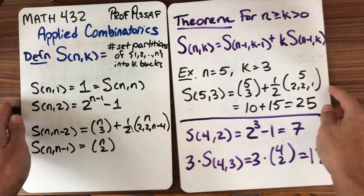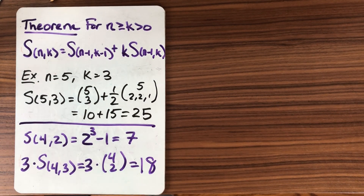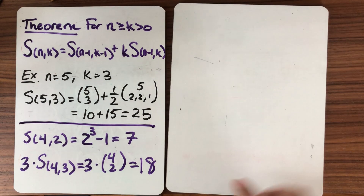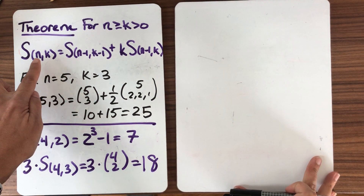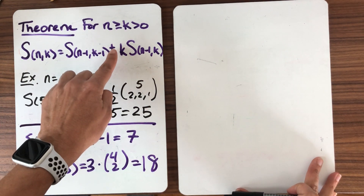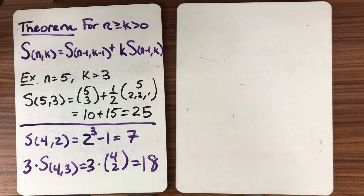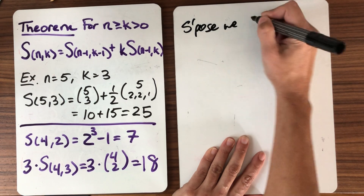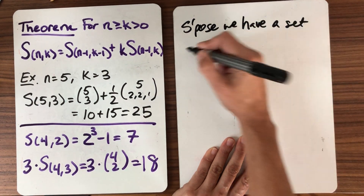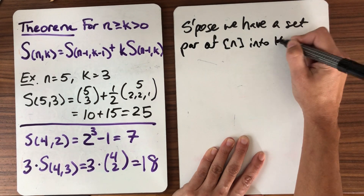Let's try to understand why the theorem is true. This is a great example of how to prove recurrence relationships in a combinatorial way. It's an art to give these combinatorial proofs, but the more you see of them the easier it is. The high-level idea is to decompose this set into a disjoint union. Suppose we have a set partition of N into K blocks.